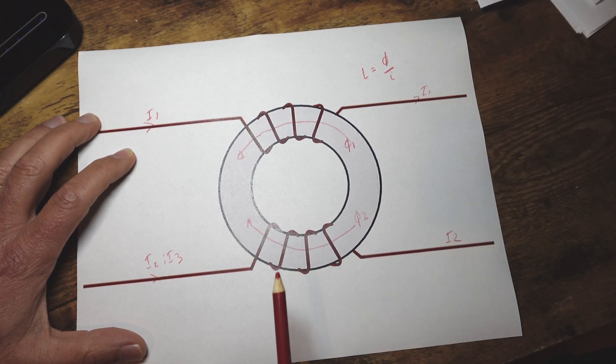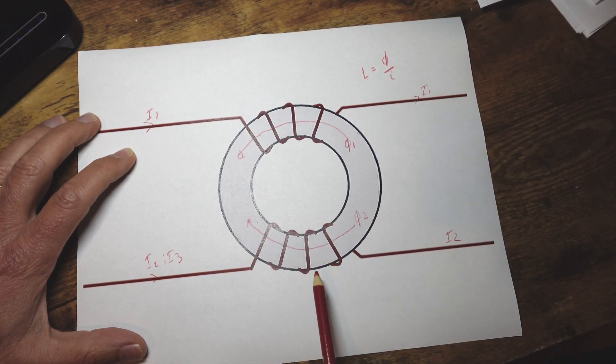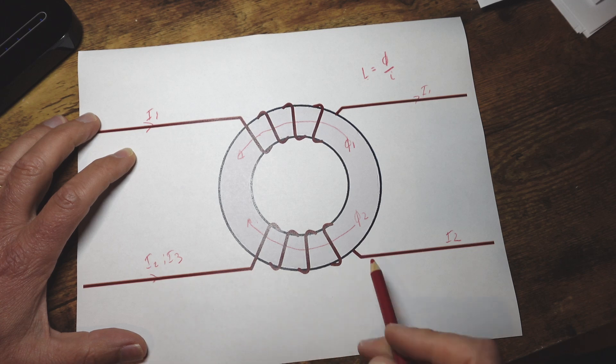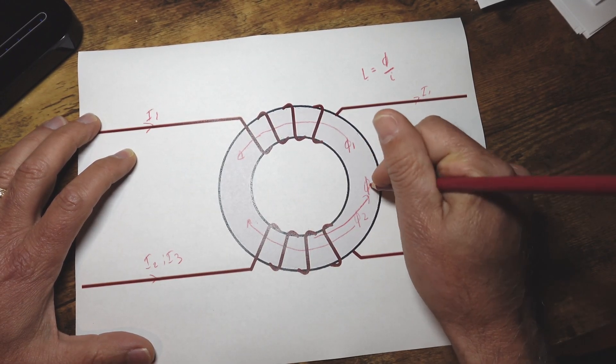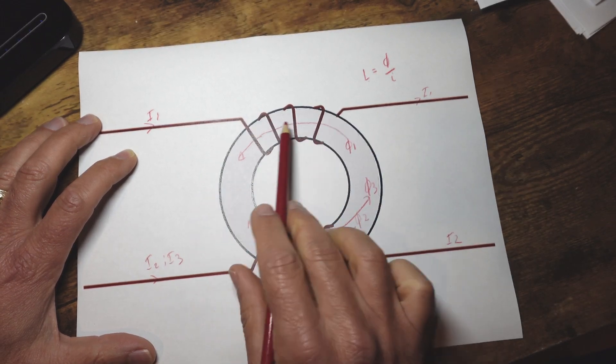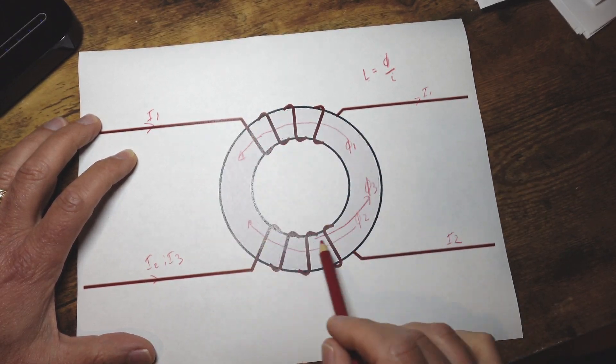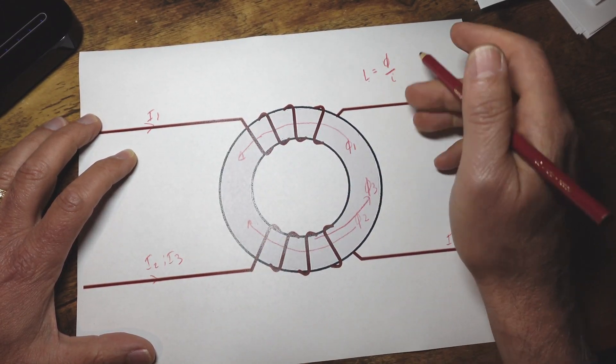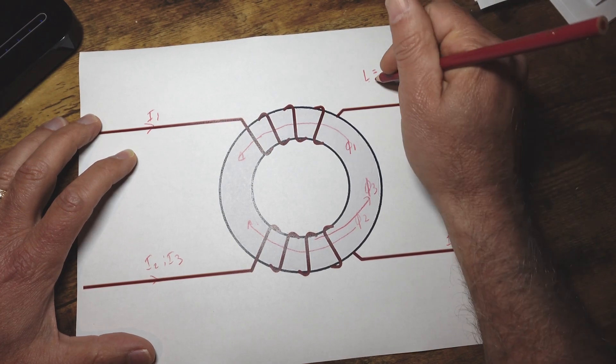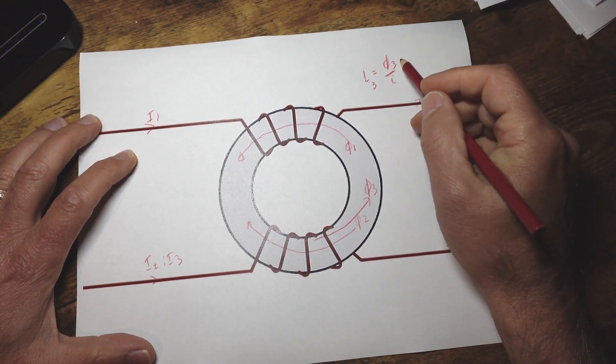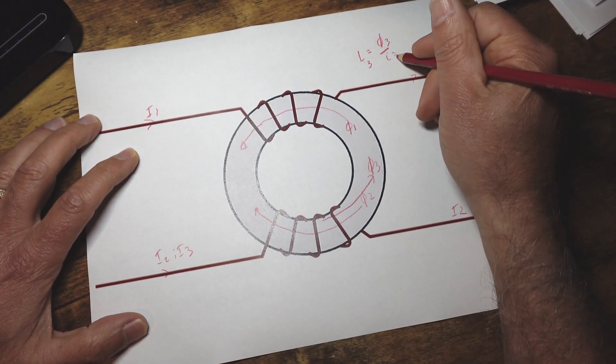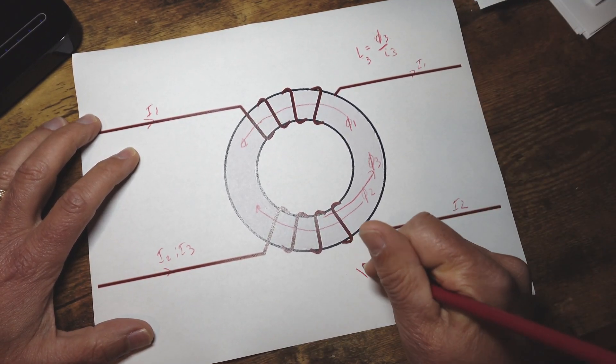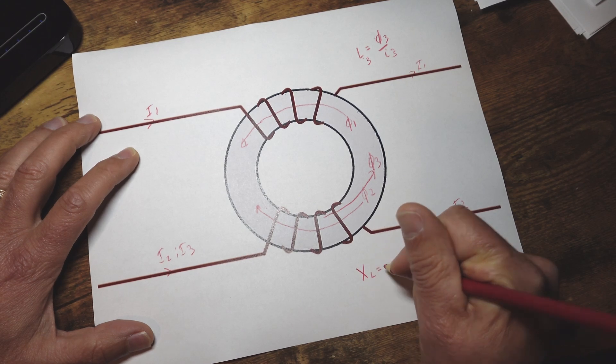Now what happens is this, that the I3 creates a flux let's say like this but there's no I3 here so now we have flux, we have inductance. So if we have say flux three we're going to have L3 equals flux three over the current and what's going to happen is the reactance Xl is j omega l and now we have ourselves some reactance.